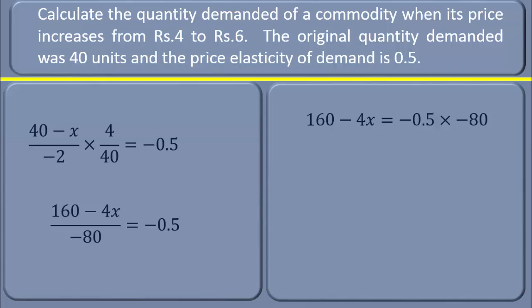We shall further simplify it by multiplying both sides by -80. We shall have -0.5 × -80 on the right hand side. The -80 on the left hand side gets cancelled. Now, we have 160 - 4x = 40.